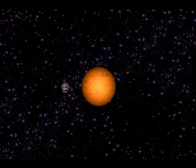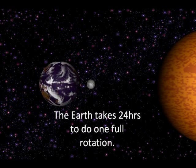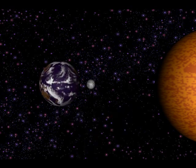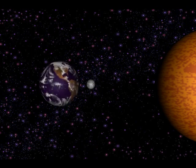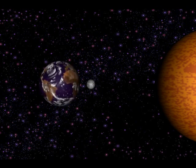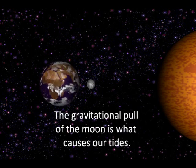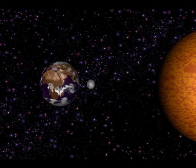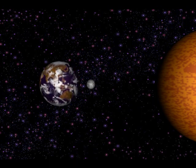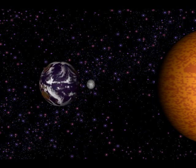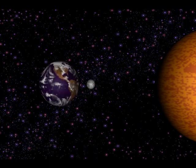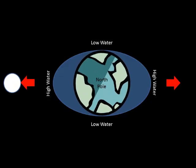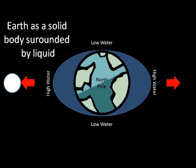The Earth is also rotating on its own axis. It takes 24 hours for the Earth to do one full rotation. The moon, which is also orbiting the Earth, has a huge gravitational pull on our oceans. It is this pull that causes the tides. To simplify things, it is best to imagine that the Earth is a solid mass rotating within a liquid — the ocean.